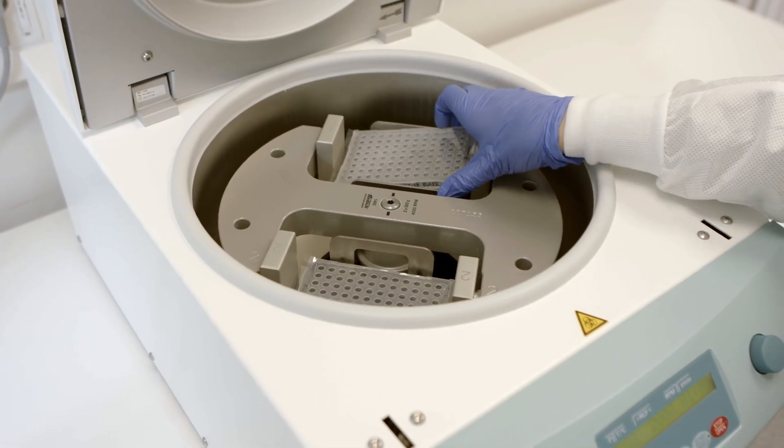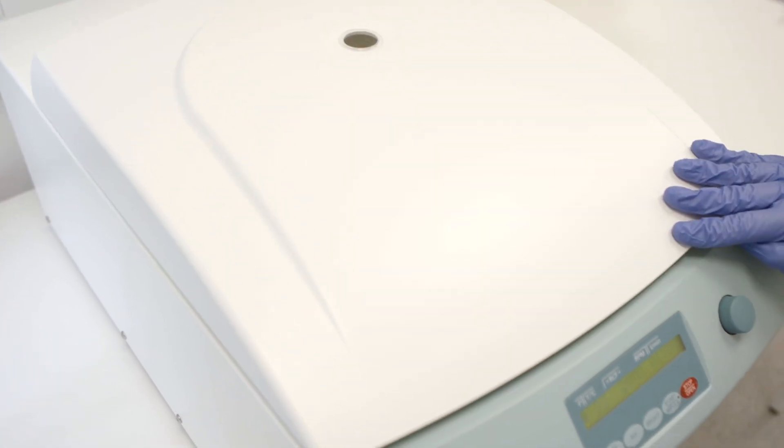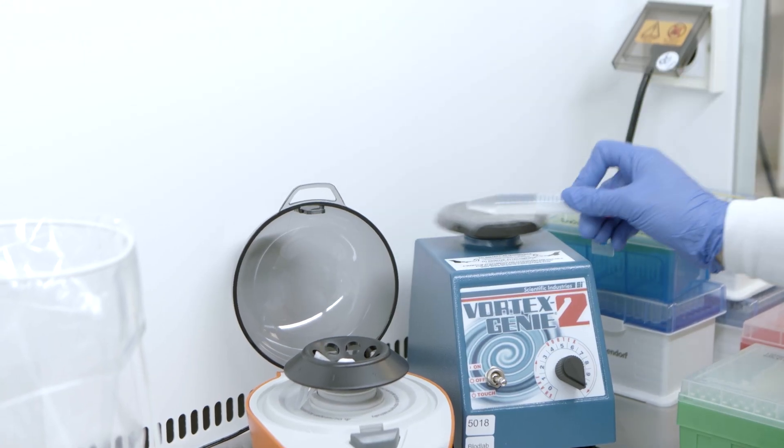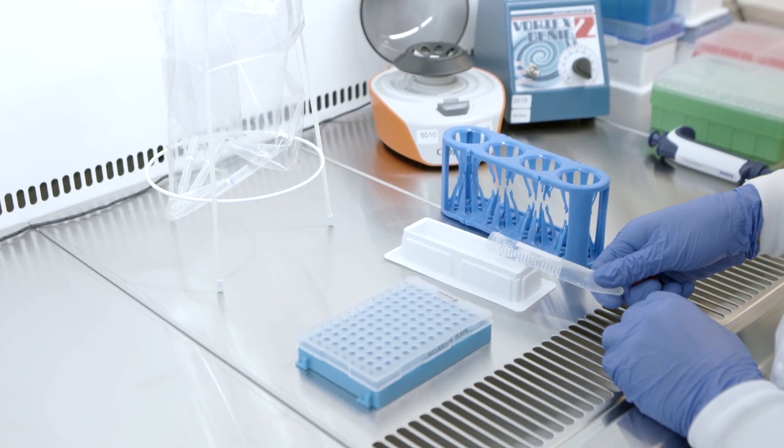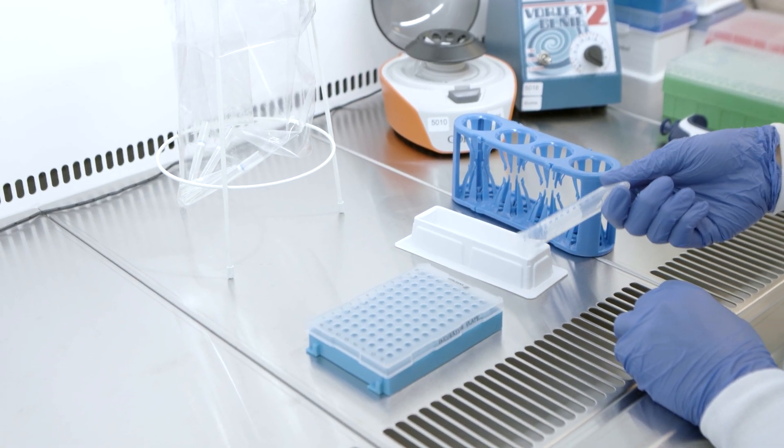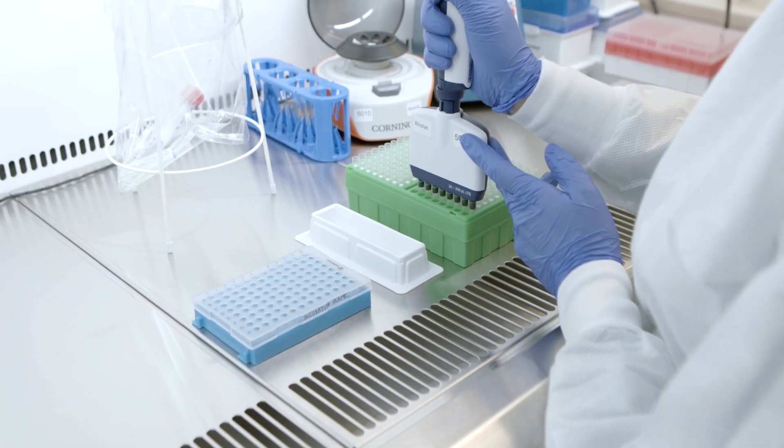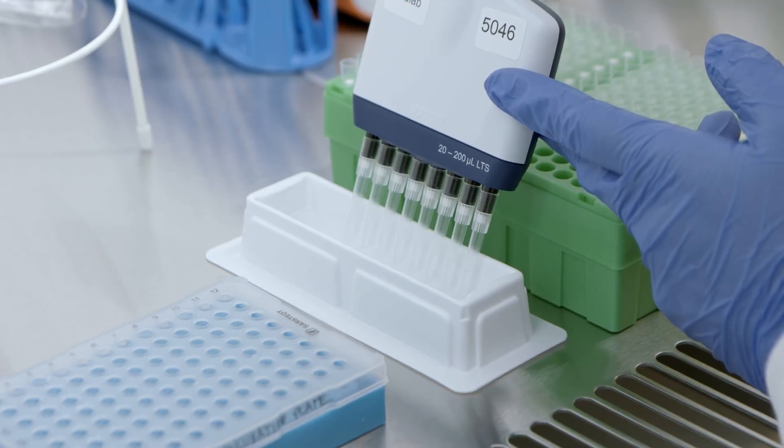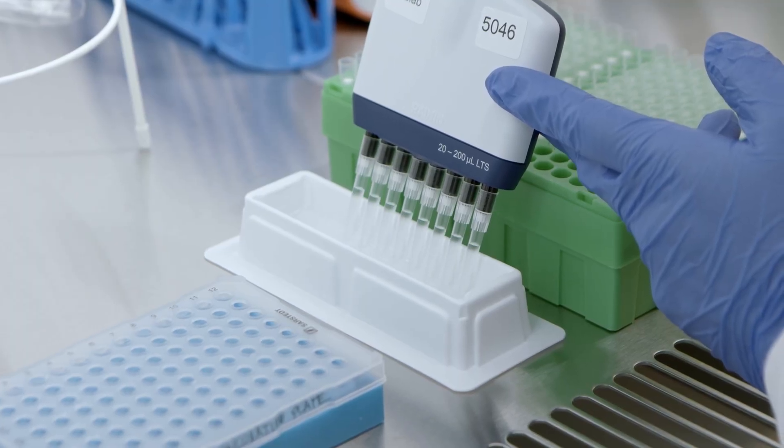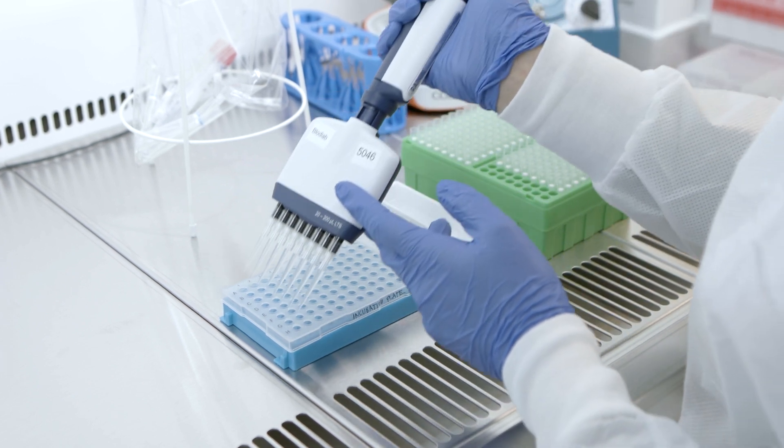Spin down the incubation plate and carefully remove the adhesive film. Vortex the extension mix and pour into a multi-channel pipette reservoir. Precondition 200 microliter multi-channel pipette tips using extension mix before proceeding. Use the same pipette tips for the entire plate.